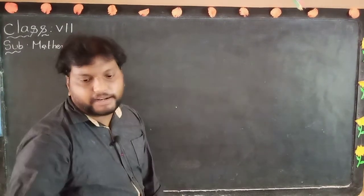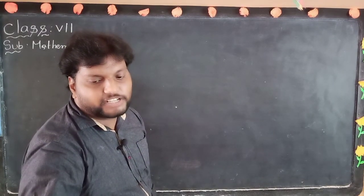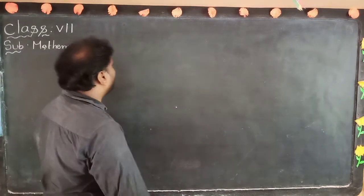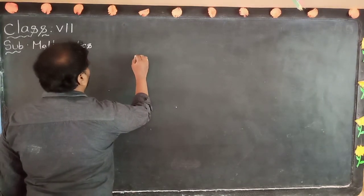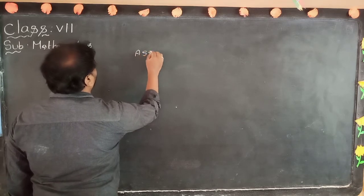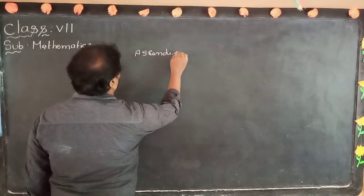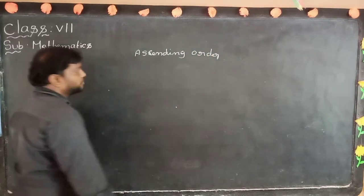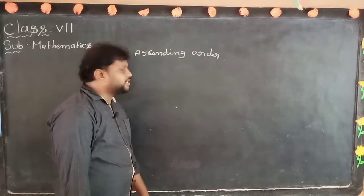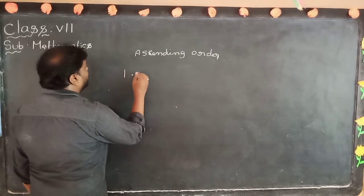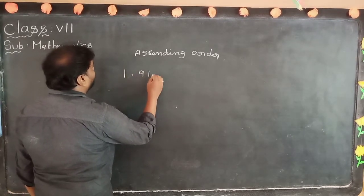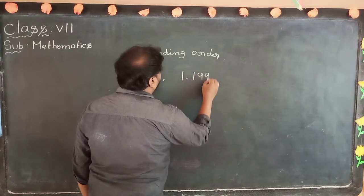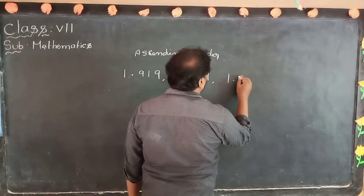Ascending order and descending order follow the same process as comparison of decimals. For example, arrange in ascending order: 1.919, 1.199, 1.91.